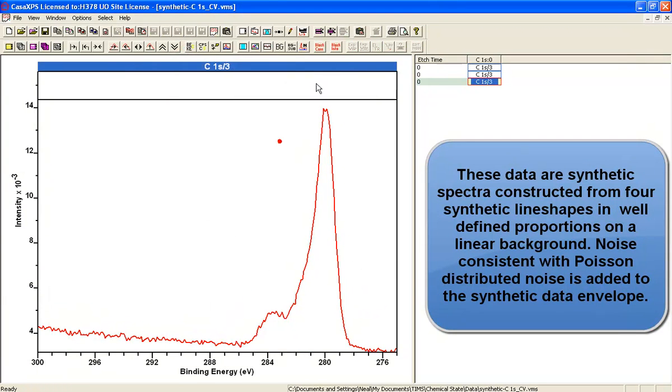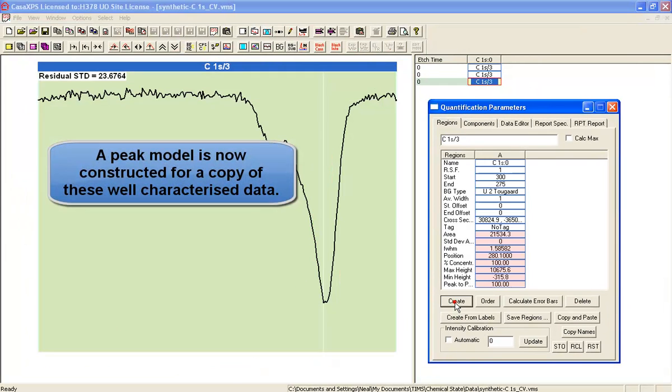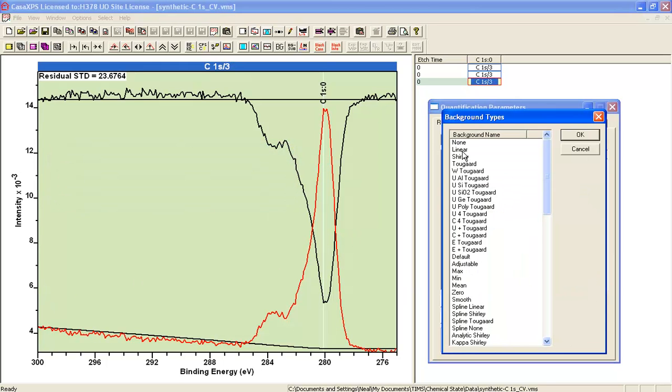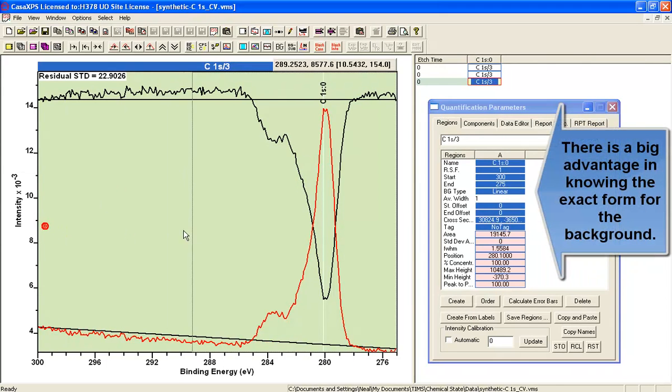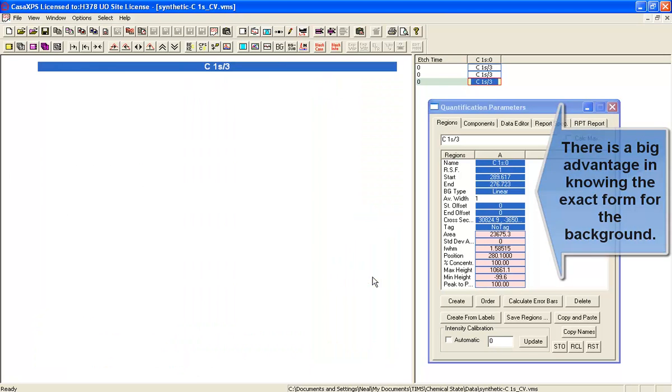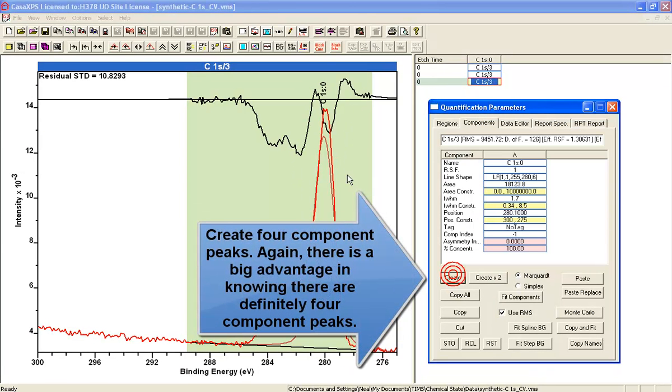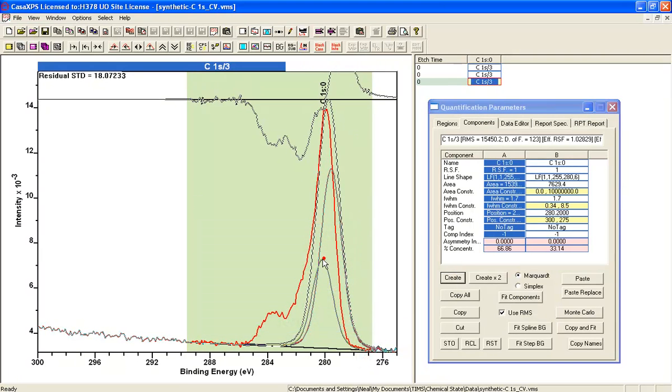So we have now got a spectrum that looks like a carbon 1s and we know exactly what is within these data. So we ought to be able to reproduce this quite nicely based on generating a peak model with four components and a linear background. So this is what we'll do. We'll introduce a linear background, create a set of four components and fit these against the data.